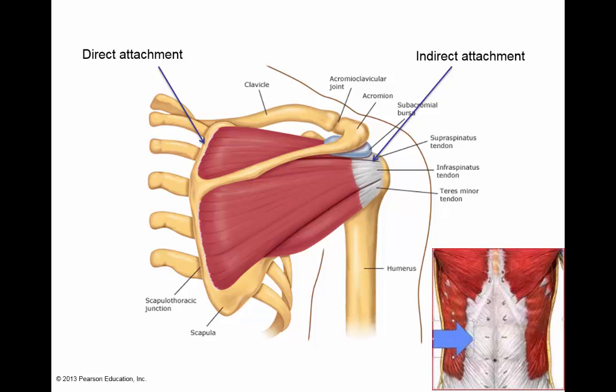Looking at an example: on the scapula, one side of the muscle attaches directly to bone — a direct attachment. At the other end, all the epimysium comes together and forms a rope-like tendon that attaches to the humerus — an indirect attachment. An aponeurosis is a sheet-like tendon where a whole bunch of epimysium comes together to form one big sheet, attaching muscle to bone or muscle to muscle.